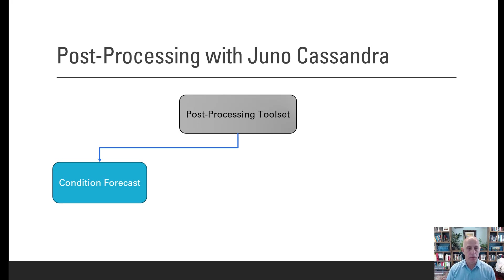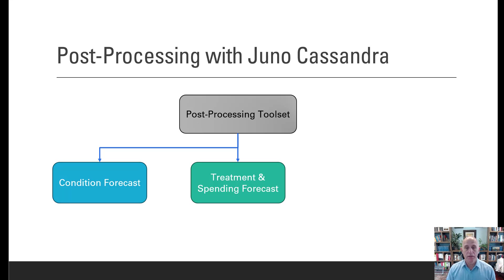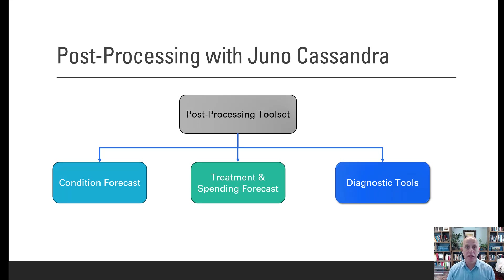In this video we are specifically going to look at the condition forecast. One of the great objectives of an infrastructure deterioration model is to forecast what the future condition of your infrastructure network will look like, and the predicted condition of that network is of great importance to understand, document, and convey to others. The second element is the analysis of treatments and spending forecasted for the future in order to achieve a certain condition. The third post-processing tool in Juno Cassandra is a set of diagnostic tools. These three components will be dealt with separately in three different videos.